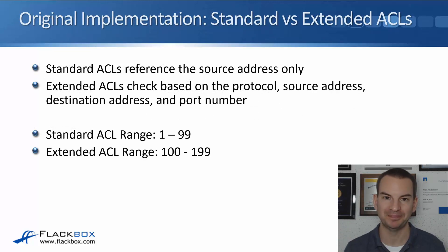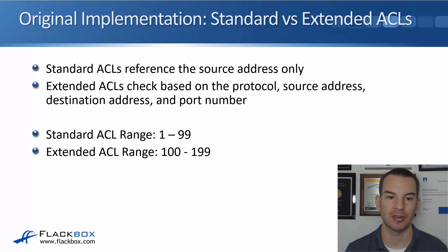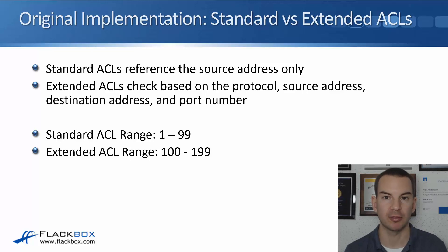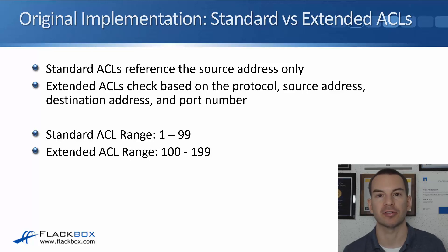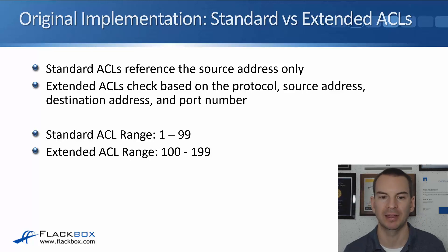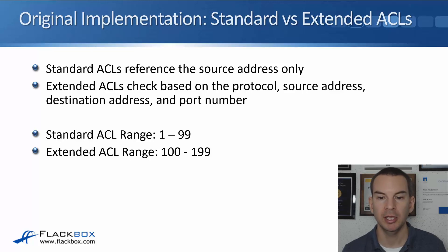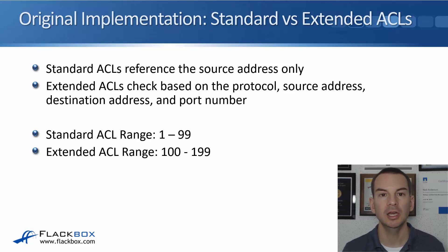The original implementation was standard and extended numbered ACLs. Standard ACLs reference the source address only — the router only cares about the source address when it processes the ACL; it's not looking at the destination address, the protocol, or the port number. Extended ACLs are more granular — they can also check the protocol, like TCP or UDP, the destination address, and the port number.